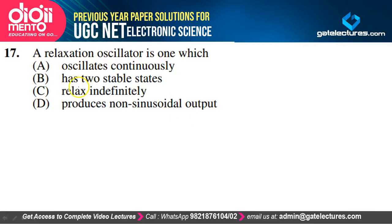Question 17: A relaxation oscillator produces non-sinusoidal output — option D is correct. A relaxation oscillator is used to produce non-sinusoidal repetitive or periodic signals such as triangular waves or square waves. That is the main function of a relaxation oscillator.